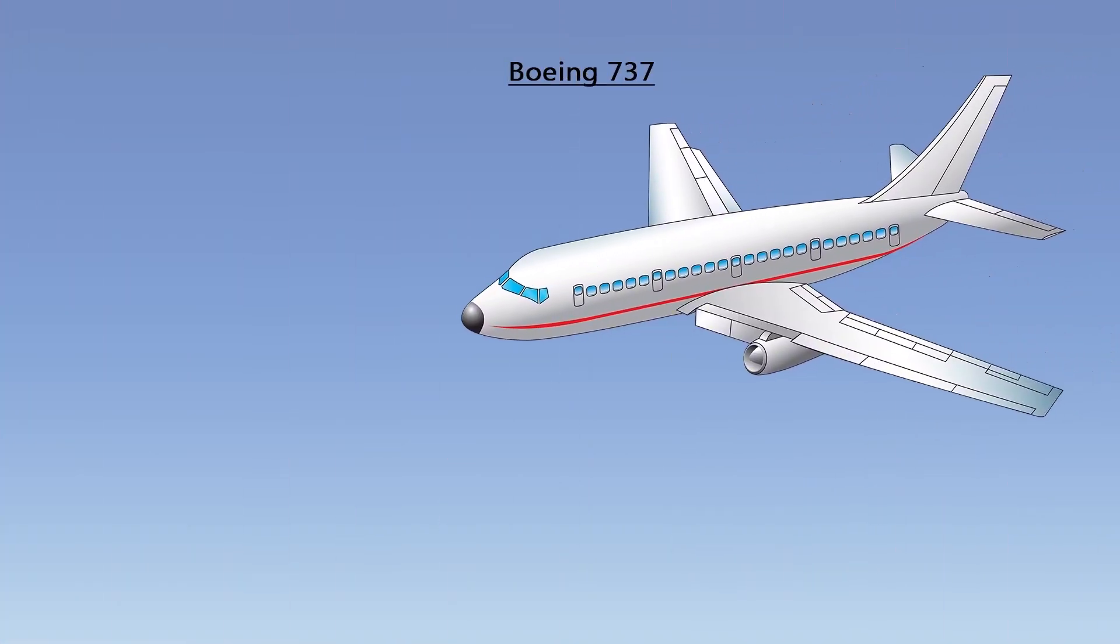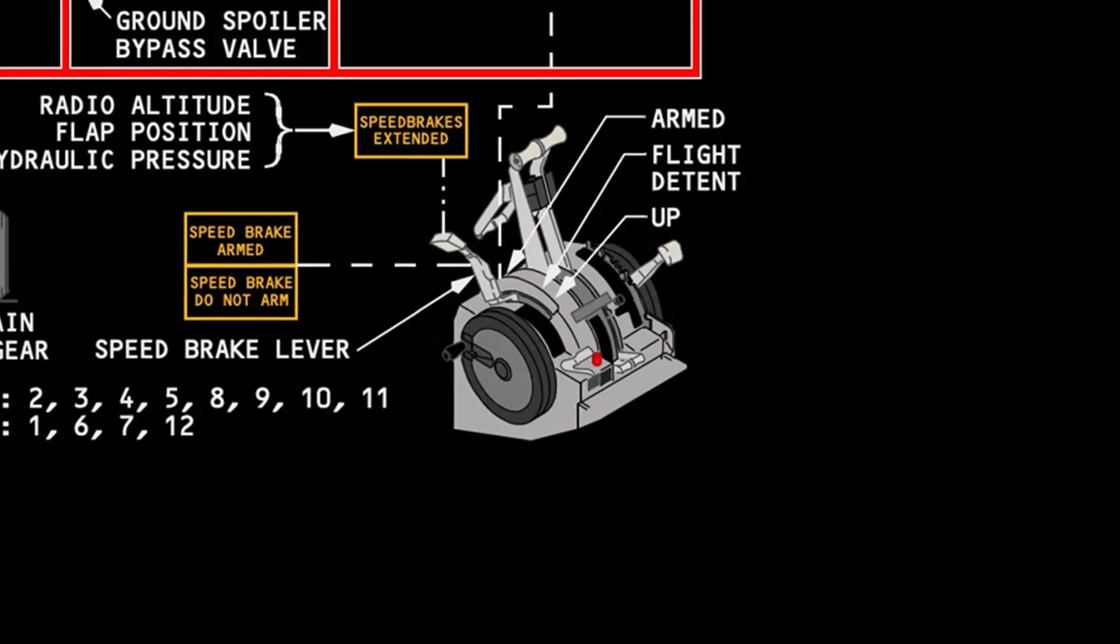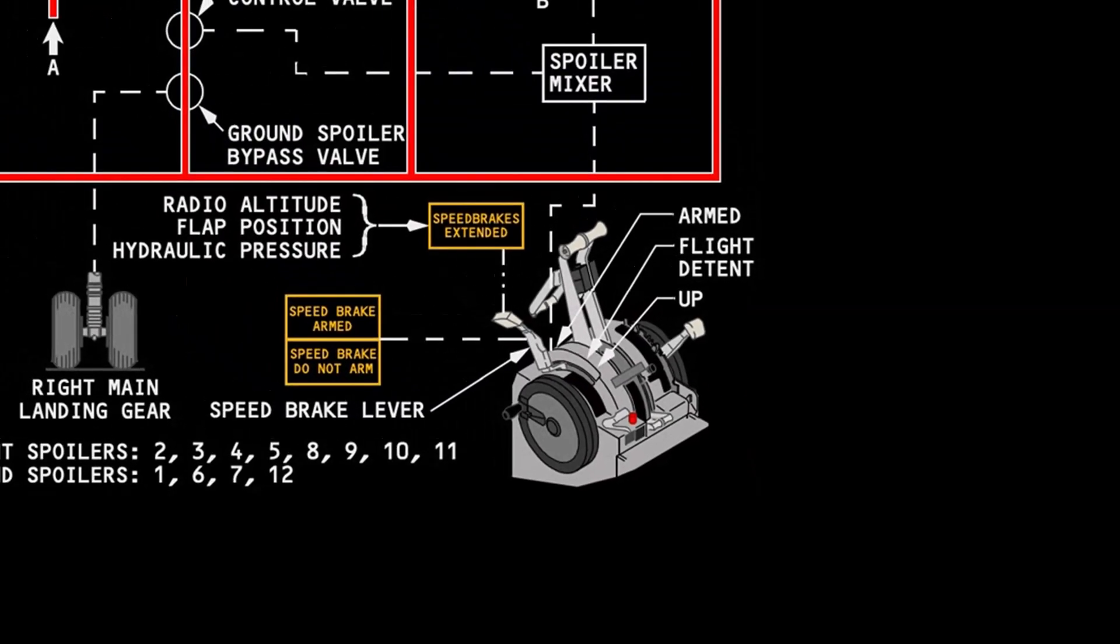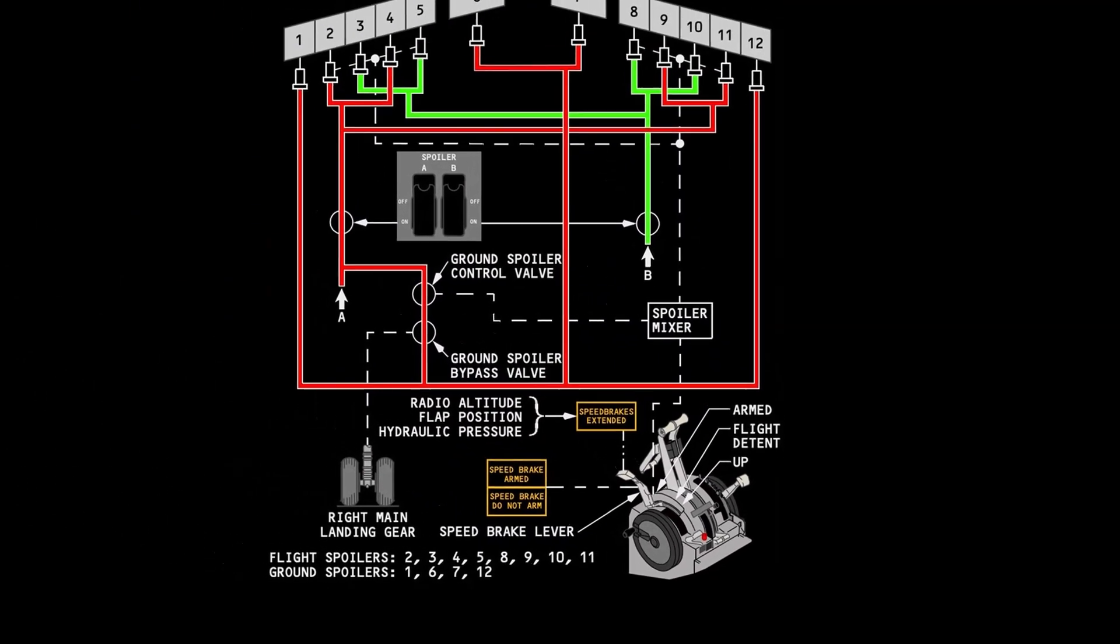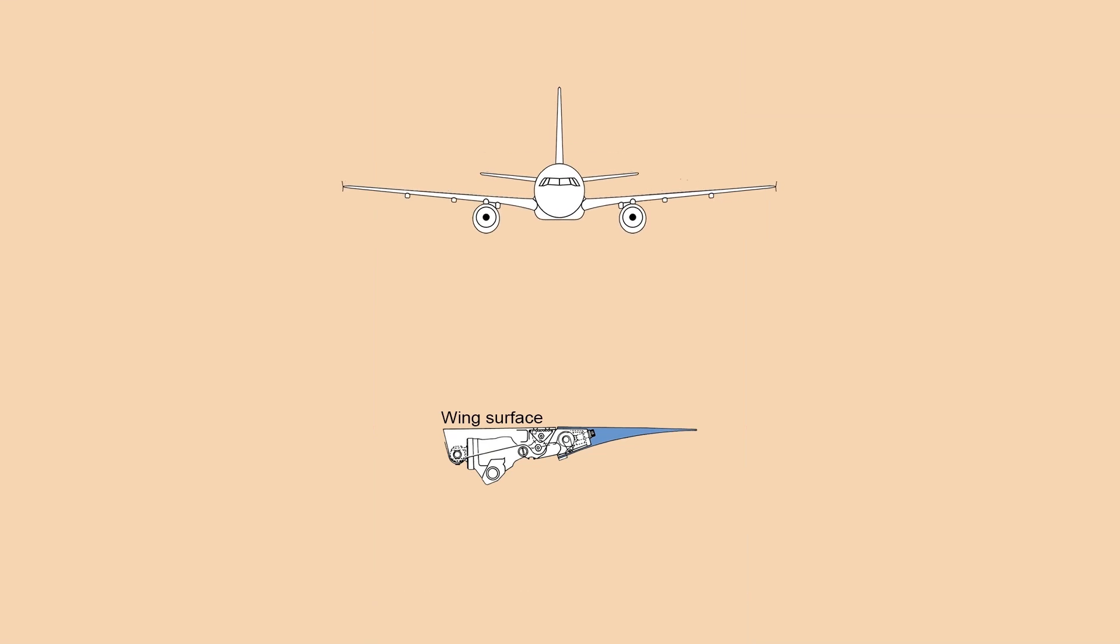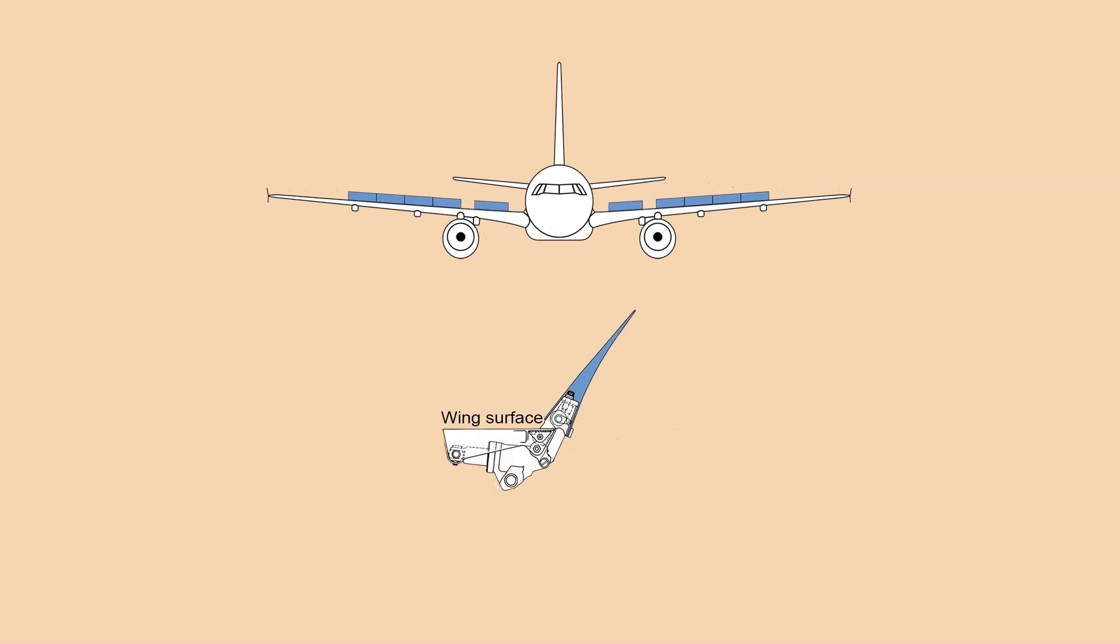A spoiler is a device found on the upper surface of many heavy and high-performance aircraft. It is stowed flush to the wing's upper surface. When deployed, it raises up into the airstream and disrupts the laminar airflow of the wing, thus reducing lift. Spoilers are unique in that they may also be fully deployed on both wings to act as speed brakes. The reduced lift and increased drag can quickly reduce the speed of the aircraft in flight.